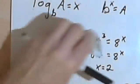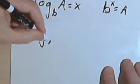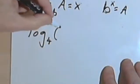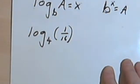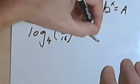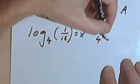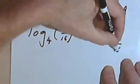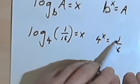And now let's do some of the fractions. So how about the log base 4 of 1 over 16, 1 over 16 equals x. So that means that 4 raised to the x power equals 1 over 16.